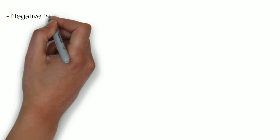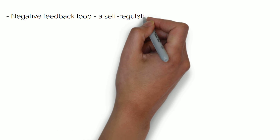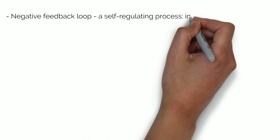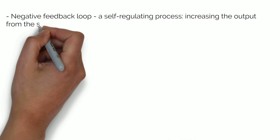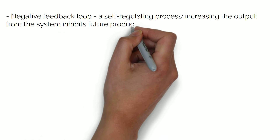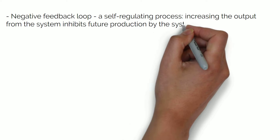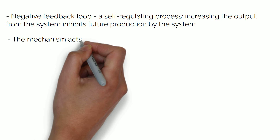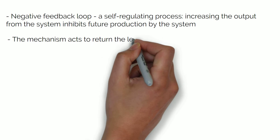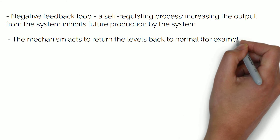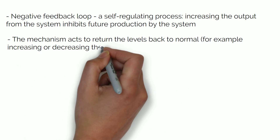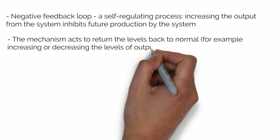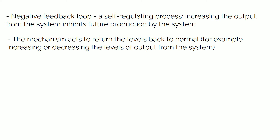A negative feedback loop is a self-regulating process — the idea that increasing the output from the system inhibits future production by the system. The mechanism acts to return levels back to normal, for example by increasing or decreasing the levels of output from the system. These points will be illustrated in more detail in the following examples.